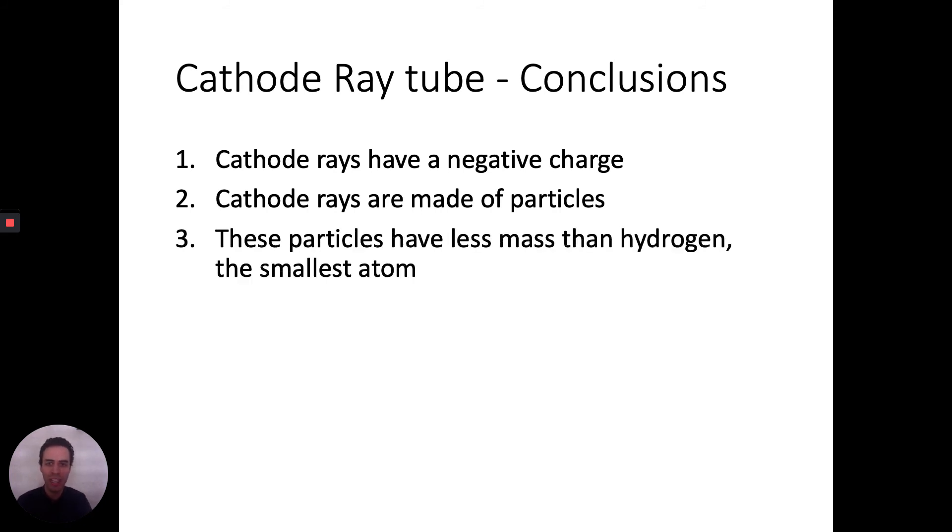Conclusion number three: these particles have less mass than hydrogen, which is the smallest atom. This is a really big deal. It doesn't seem like much, but remember how we used to think that atoms were indivisible? You couldn't have anything smaller than an atom? Well, here comes the cathode ray tube, and Thomson is realizing that actually there is something smaller than an atom. This is a big deal.